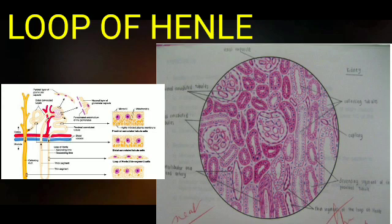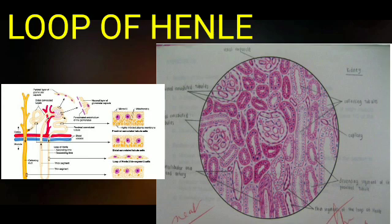The thick descending segment of the loop of Henle shows histological features similar to the proximal convoluted tubule. The thin segments of the loop of Henle are lined by simple squamous epithelium with a diameter of around 15 micrometers, and the cytoplasm shows pale staining with eosin. The thick ascending segment of the loop of Henle shows histological features of the distal convoluted tubule.